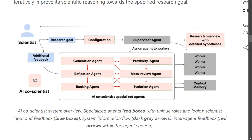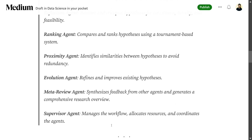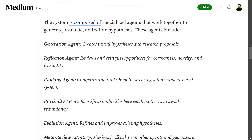The team describes the following agents: the generation agent creates initial hypotheses and research proposals; the reflection agent reviews and critiques the hypotheses — these two essentially challenge each other. The ranking agent ranks new hypothesis ideas on the final board. The proximity agent identifies similarities between hypotheses to avoid redundancy. The evolution agent refines and improves existing hypotheses. The meta-review agent synthesizes feedback from other agents and generates a comprehensive research overview. The supervisor is the manager overseeing all six.